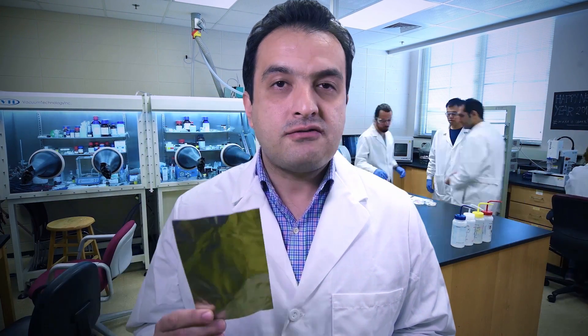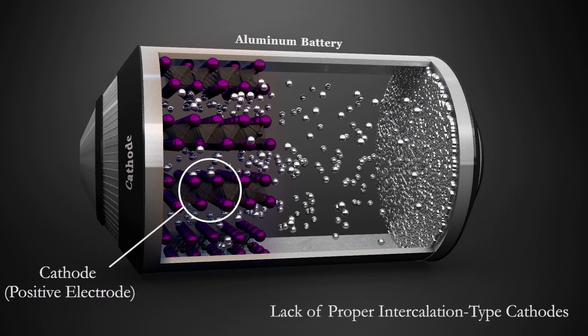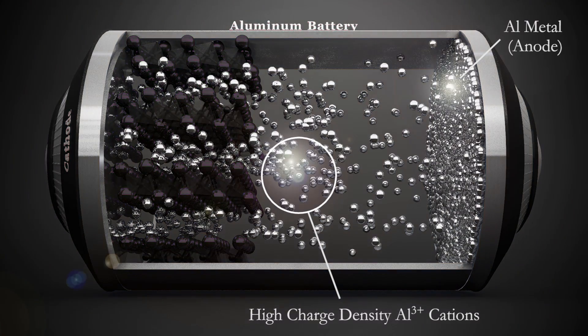An aluminum battery will be cheap and safe because aluminum is the most abundant metal and it's not flammable. It also has the highest volumetric capacity among all metals. Development of aluminum batteries is mostly hindered by a lack of cathode materials that can host high charge density aluminum cations.